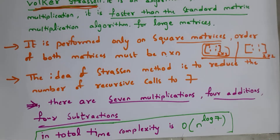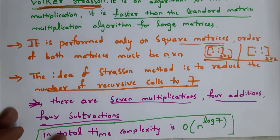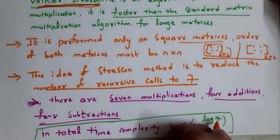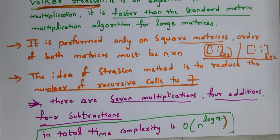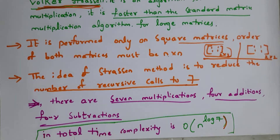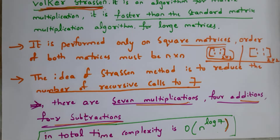The idea of Strassen's method is to reduce the number of recursive calls to 7. So its total time complexity is O(n^log7), because it reduces the number of recursive calls to 7. In Strassen's matrix multiplication there are seven multiplications, four additions, and four subtractions.